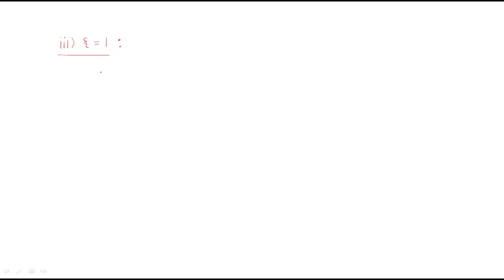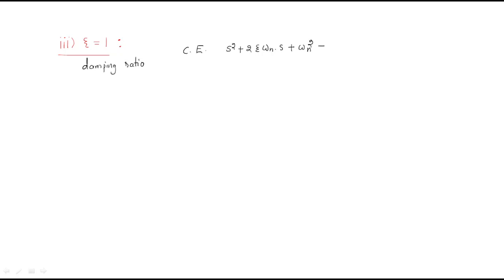In this session we will discuss the transfer function of the second-order system and how it behaves for different values of zeta, the damping ratio. The damping ratio decides how the second-order system behaves. For the second-order system, the characteristic equation is: s² + 2ζωₙs + ωₙ² = 0.